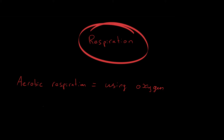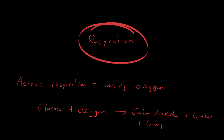You need to know the word equation for aerobic respiration — you don't need to know the symbol equation. It is: glucose plus oxygen gives carbon dioxide plus water, plus energy. Energy is written in brackets because it's not a chemical — you can't write it in a chemical equation without putting it in brackets.